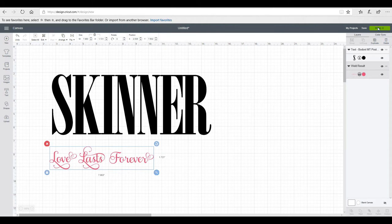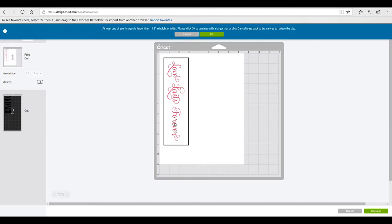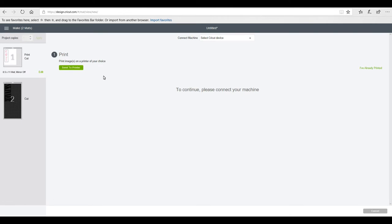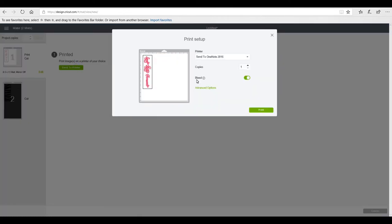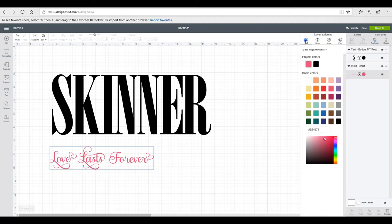So I'm then going to go to make it and you can see it's come through as a print and cut. I'm going to continue, I'm going to send to printer and I'm going to ensure that my bleed is on. So this is the bleed off and this is the bleed on.